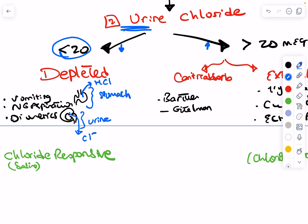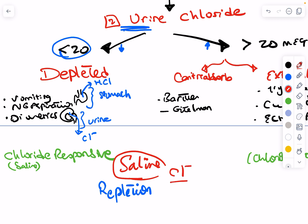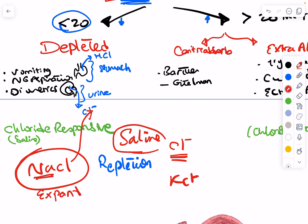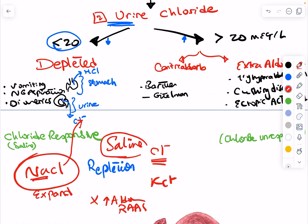Cases where metabolic alkalosis results from chloride depletion will respond to chloride repletion — these are called saline-responsive. It's not about saline per se, but its chloride content that reverses the process; even KCl would work. However, we usually give NaCl (saline) because, in addition to providing chloride, it expands plasma volume in these typically hypovolemic patients. This restores volume, reverses the hyperaldosterogenic state from RAAS activation, and eliminates the aldosterone-mediated alkalosis.